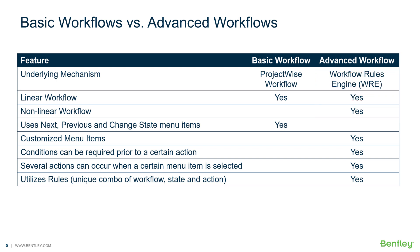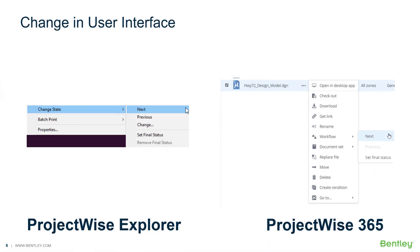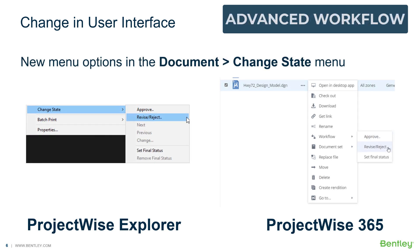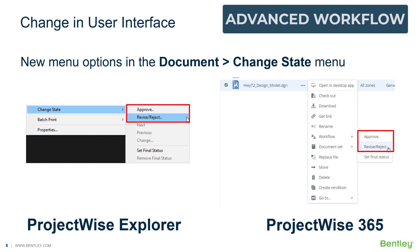A more comprehensive list is shown in this table. Normally, a workflow is assigned to a folder and users change the states of documents as needed by selecting the standard next, previous, and change options on the document change state menu. When workflow rules are in place, the standard next, previous, and change options are disabled. Instead, the user has new options or operations to select from on the document change state menu.